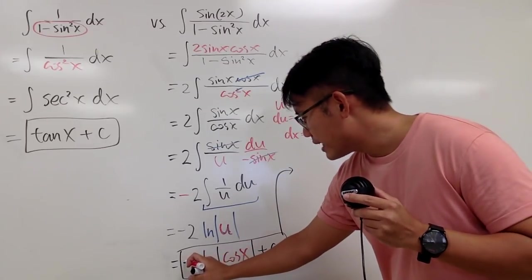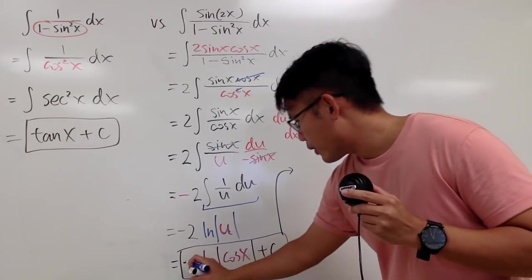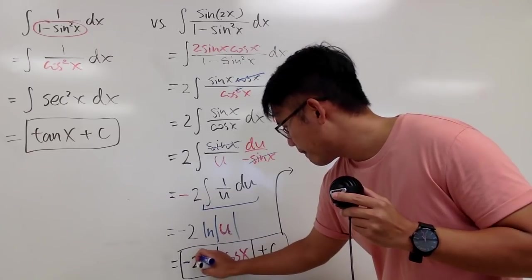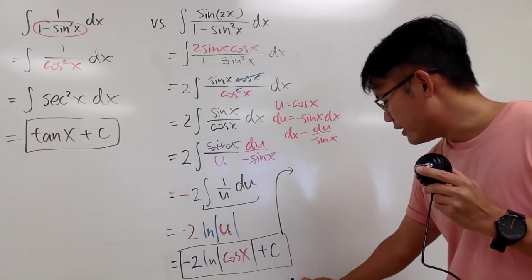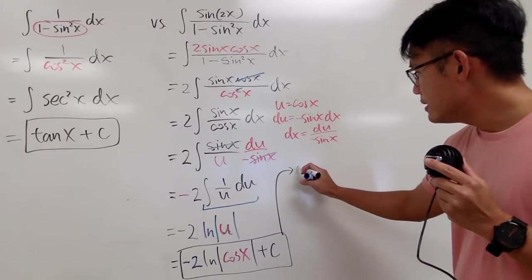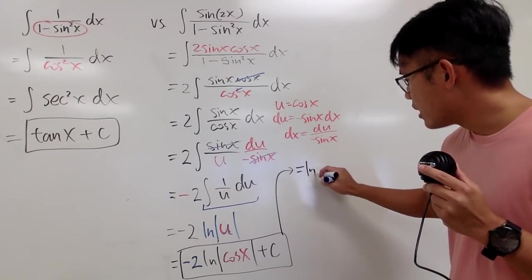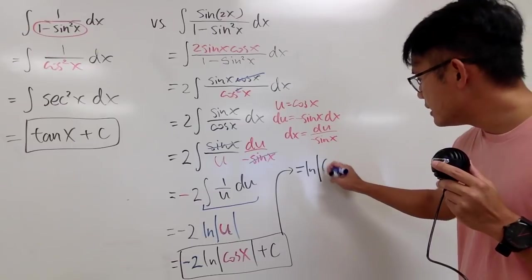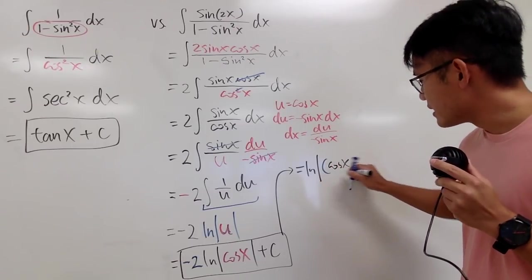So, if you look at negative 2, I'm going to bring that up as the exponent. So this is actually the same as natural log of the absolute value — and I'll put cosine x inside in parentheses.